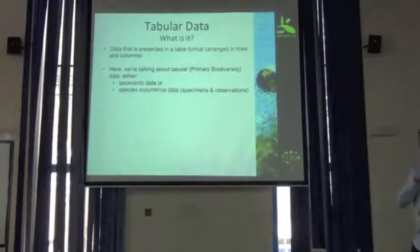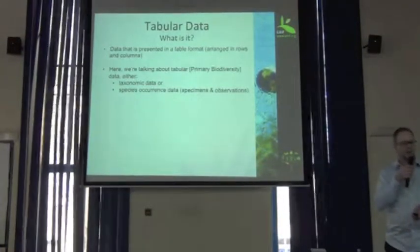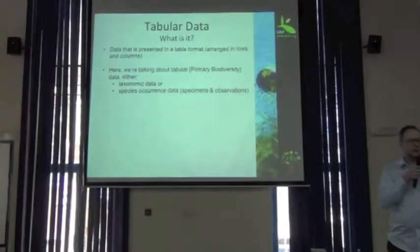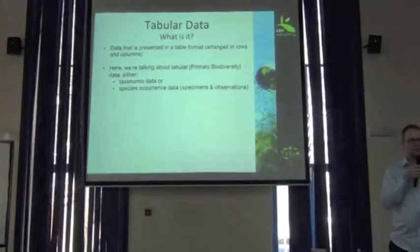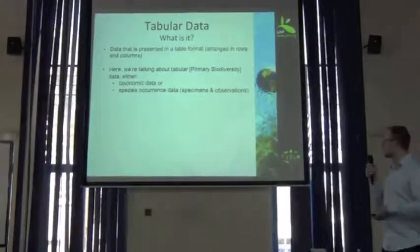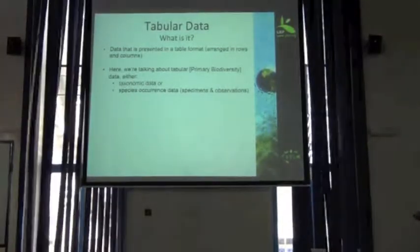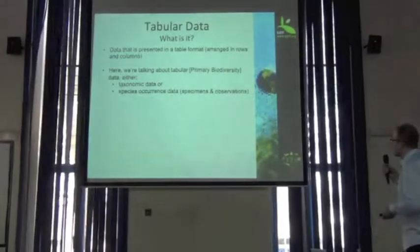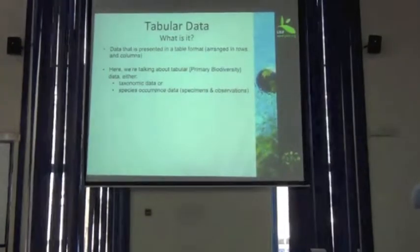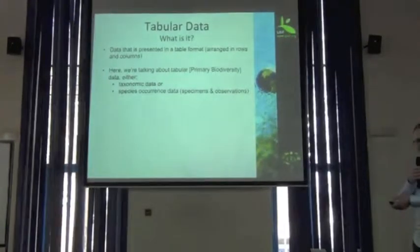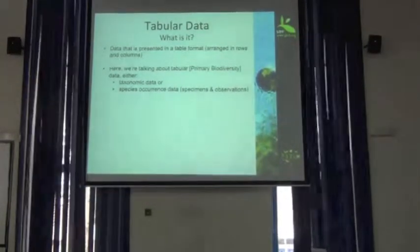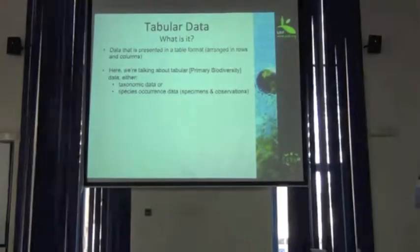Tabular data — that's what we've been looking at for the last couple of days. It's data arranged in a table: your Excel spreadsheet data, your tab-delimited data, CSV, comma-separated data, arranged in rows and columns. Particularly, we are here to talk about primary biodiversity data, broadly categorized as taxonomic data or occurrence data — and by occurrence data we mean specimens or observations.